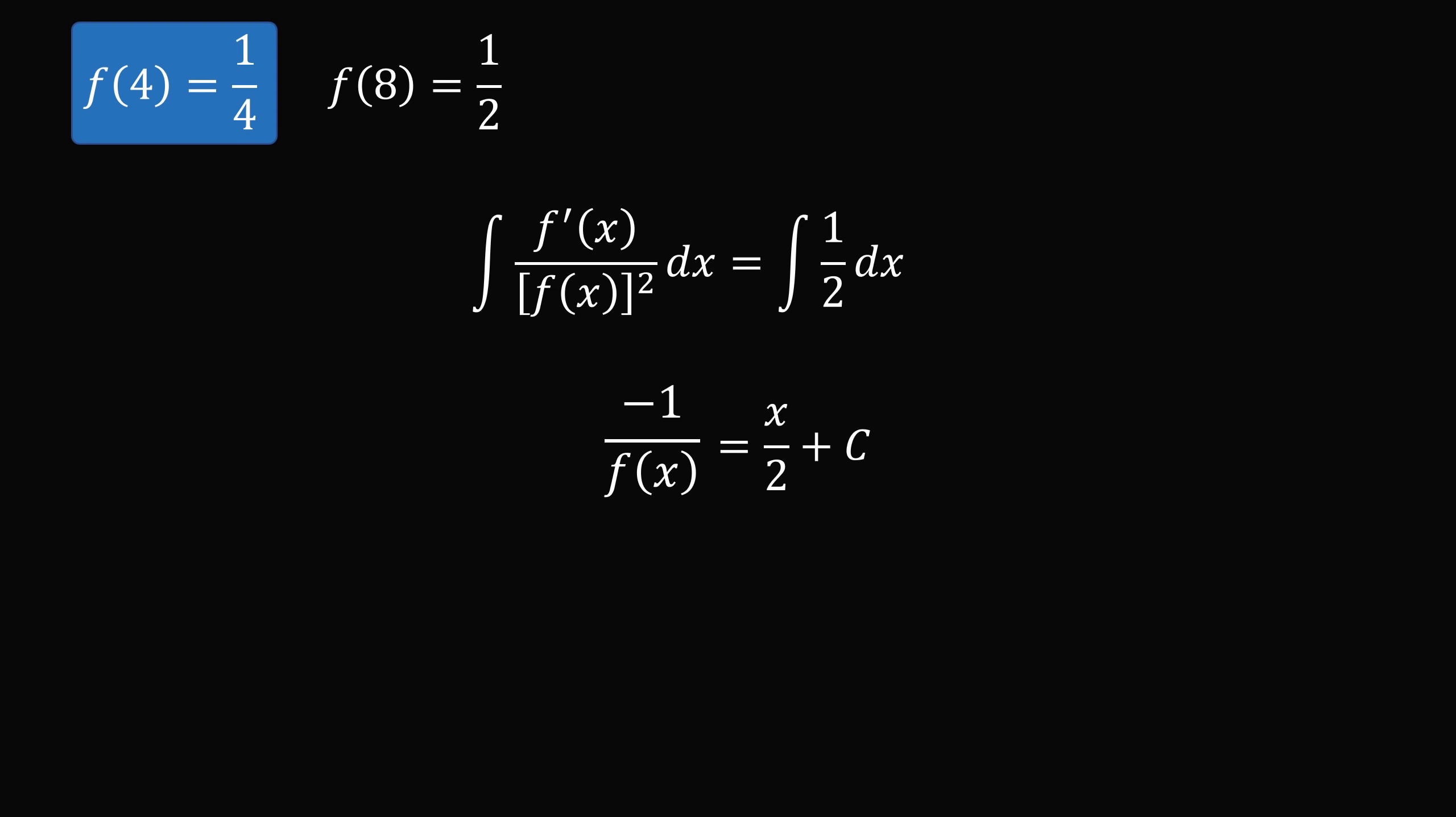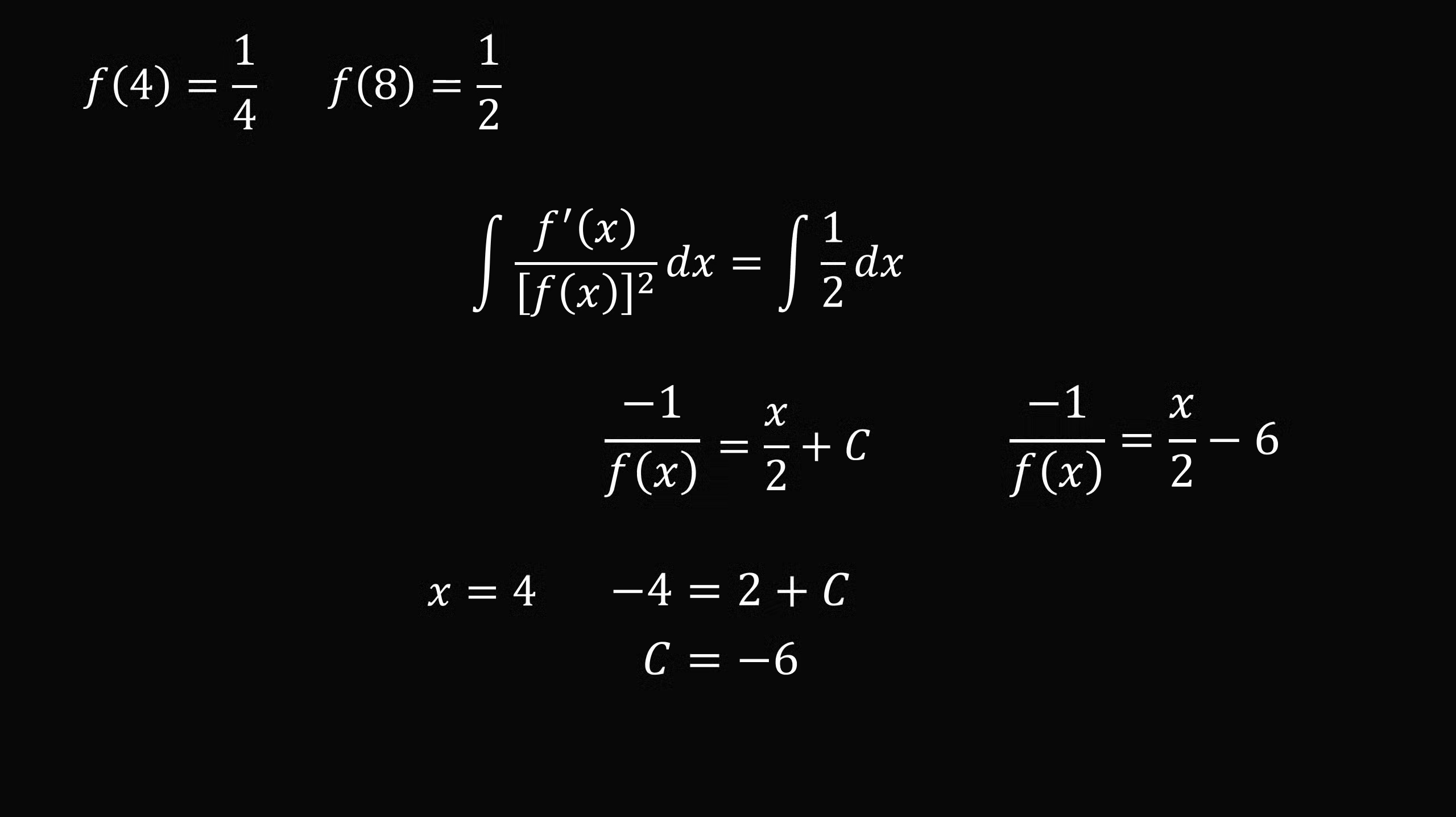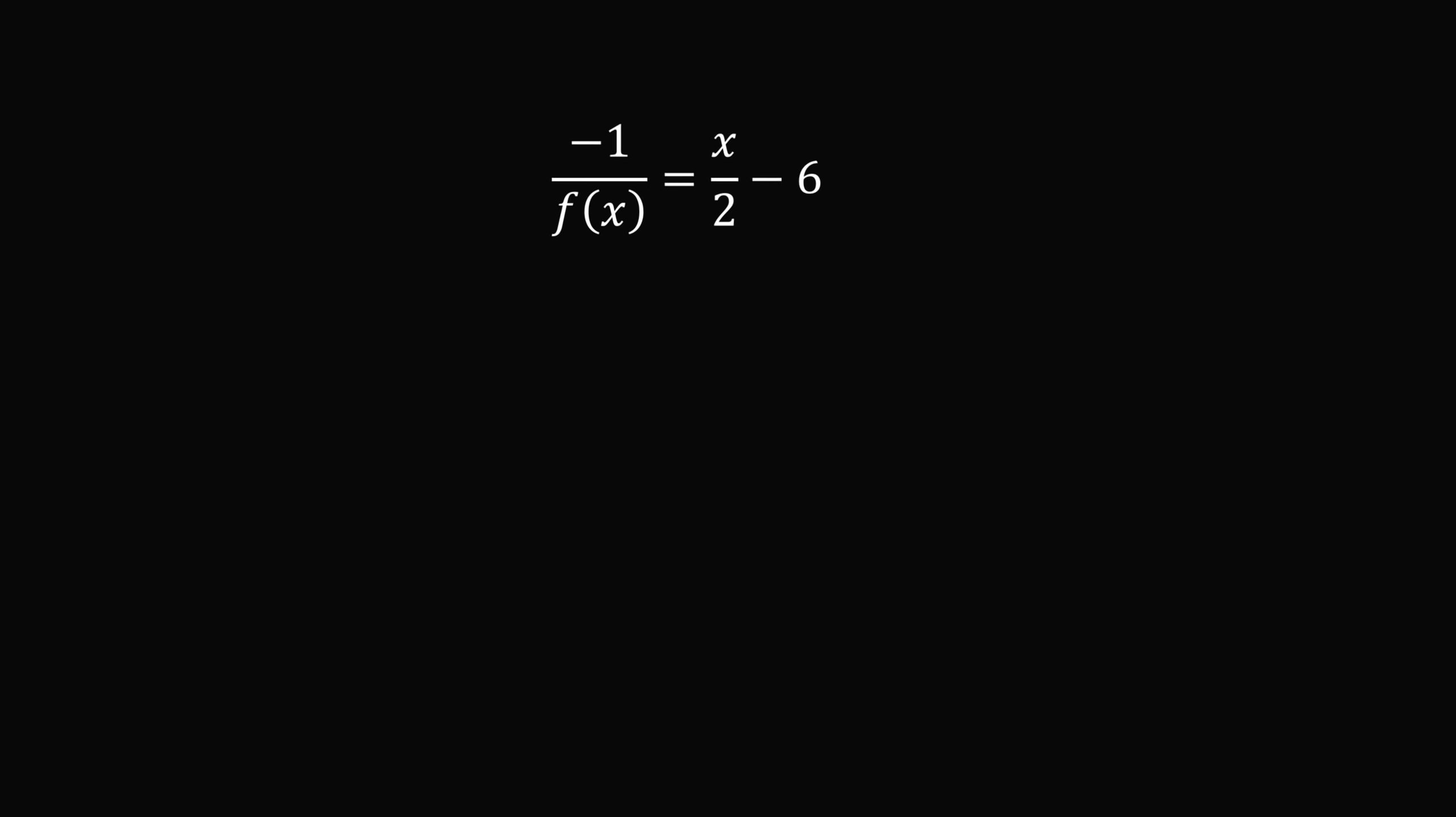We substitute x is equal to 4, and we can solve for the value of c. c will be equal to negative 6. So we have negative 1 over f(x) is equal to x over 2 minus 6. We can then simplify the right-hand side. Then we can take the reciprocal of both sides. Then we multiply both sides by negative 1. So we've solved that f(x) is equal to 2 divided by 12 minus x.